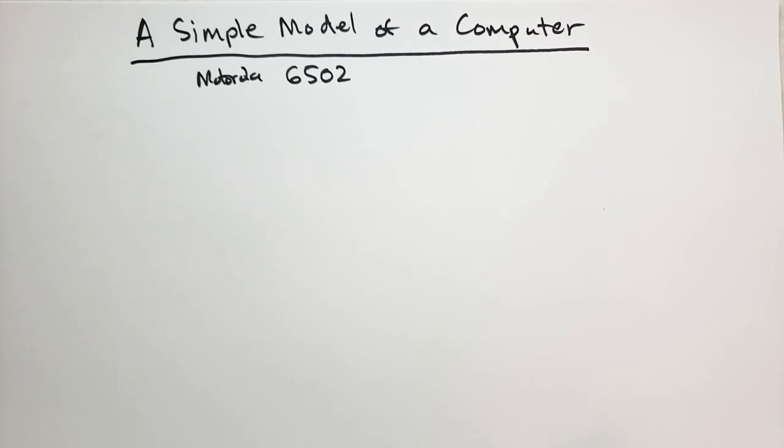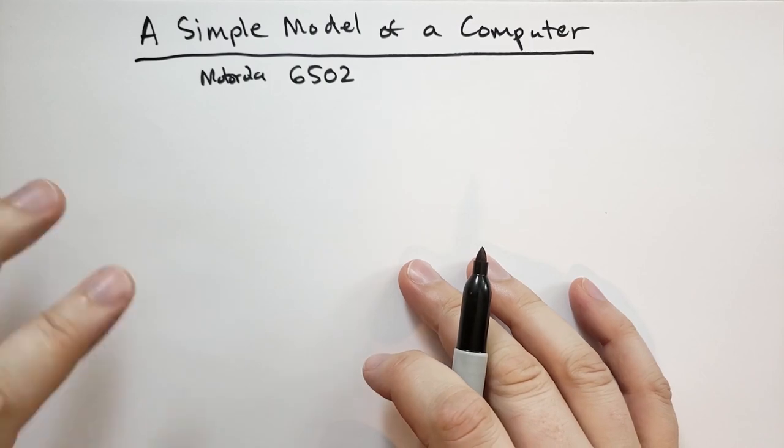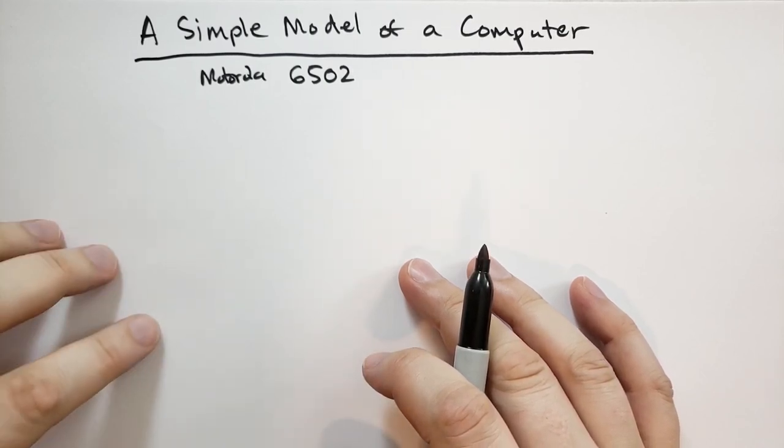First, a little definition. What is a computer? A computer is anything that computes. Back in the 1960s, a computer was actually a job. They would hire people to do computations, put them in a room, and they'd do all kinds of crazy computations.